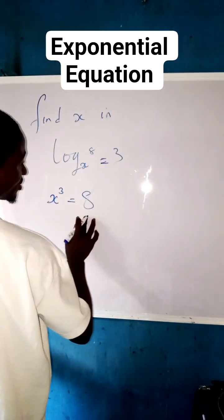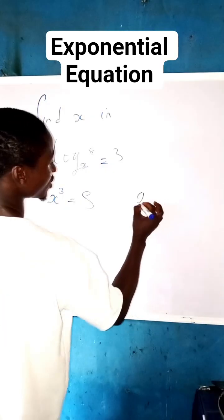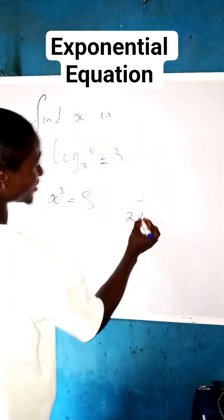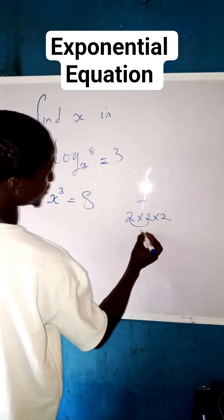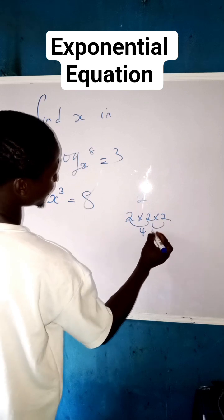Instead of writing 8, we can put this 8 to be 2 raised to the power of 3, because 2 raised to the power of 3 means 2 times 2 times 2. 2 times 2 is 4, 4 times 2 is 8.